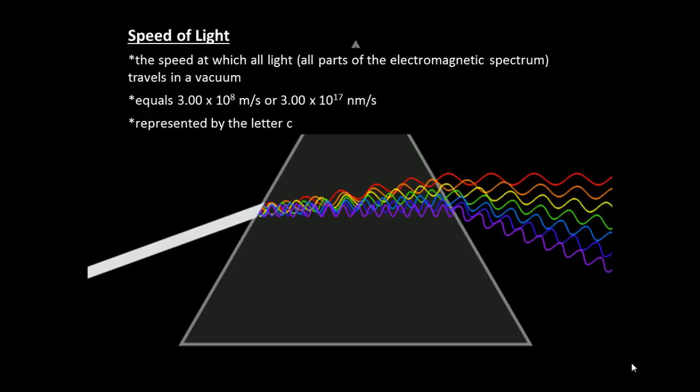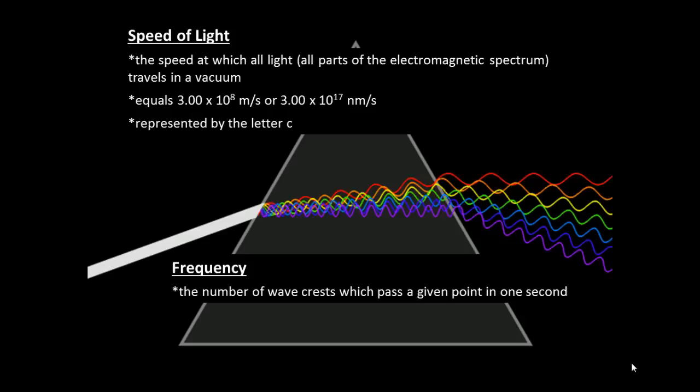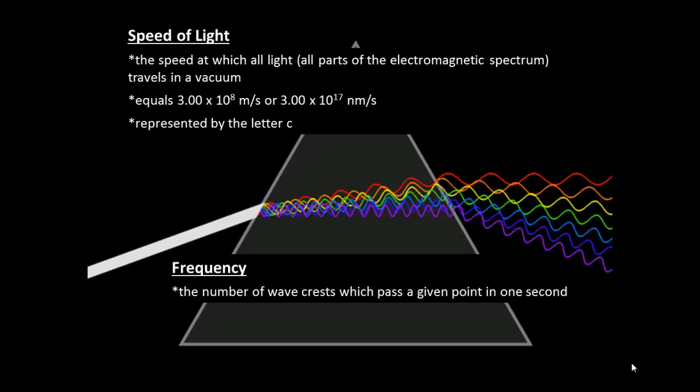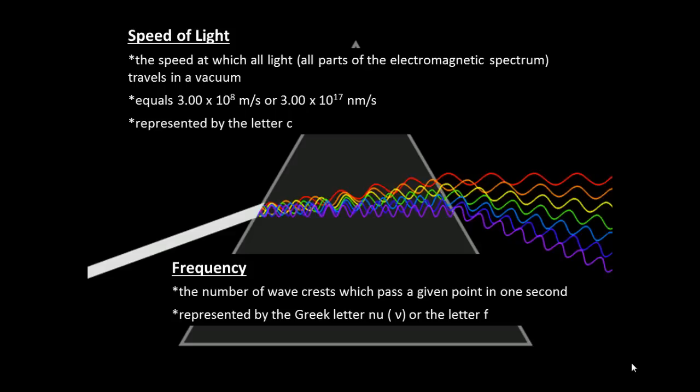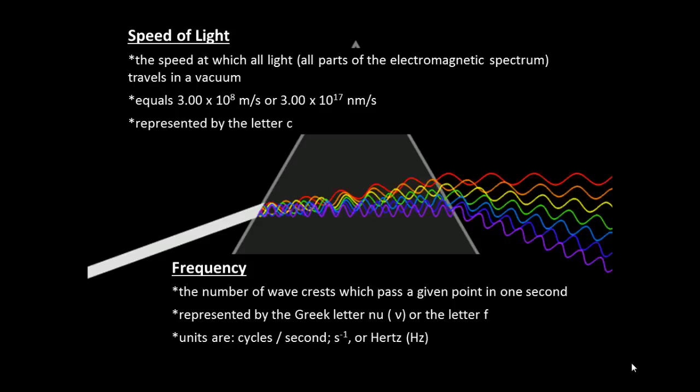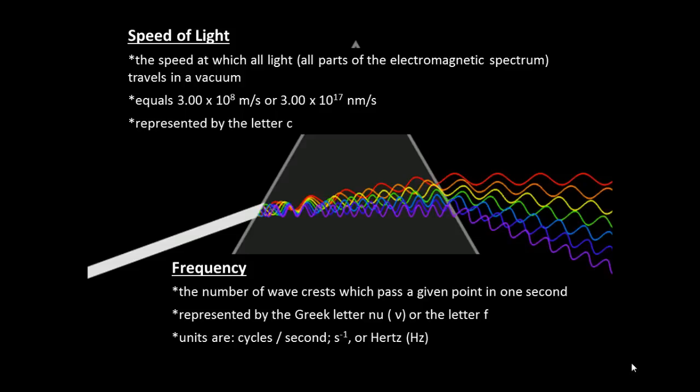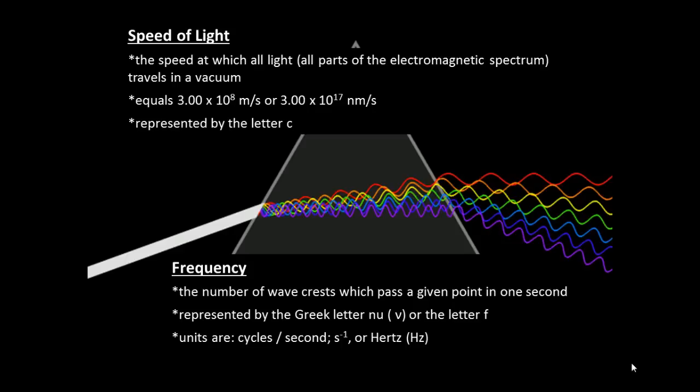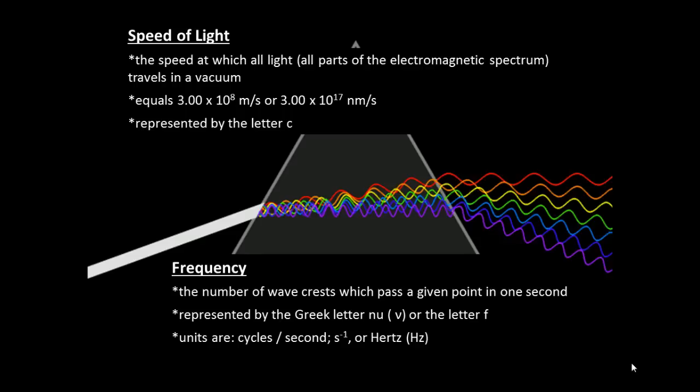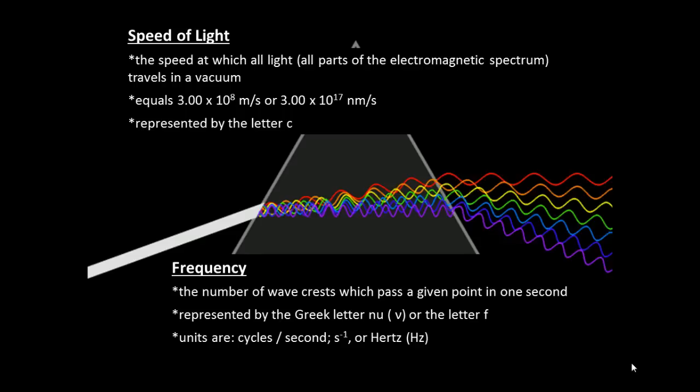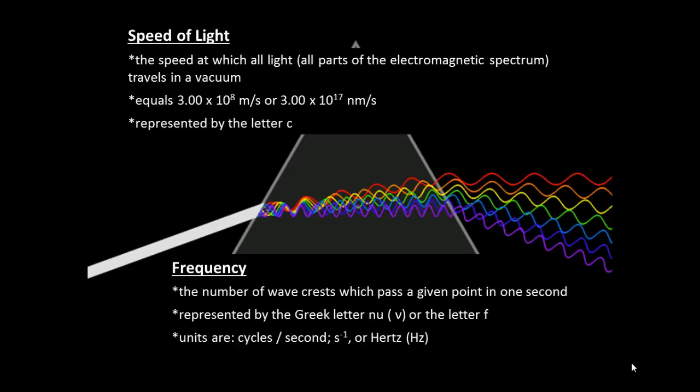The frequency of a wavelength refers to the number of wave crests which pass through a given point in one second. Frequency is represented by the Greek letter nu (ν) or the lowercase letter f, and the units are either cycles per second, reciprocal seconds, or Hertz (Hz). In a vacuum all light travels at the same speed, so frequency is only determined by the wavelength of the wave. Watch the waves as they leave the screen. Notice that more wavelengths of the purple light leave the page than wavelengths of red light. This illustrates an important property of light: the shorter the wavelength, the higher the frequency. Wavelength and frequency are inversely related, which means as one increases the other decreases.